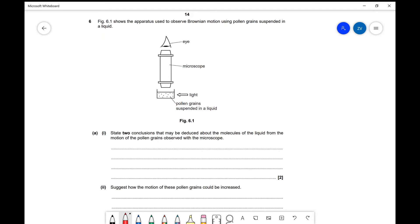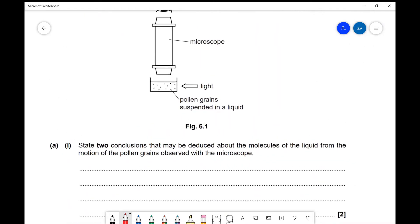Okay, well figure 6.1, the one just here, shows the apparatus used to observe Brownian motion using pollen grains suspended in a liquid. So we have a microscope down here and that's looking down at some pollen grains suspended in a liquid. What we're going to be observing is that those pollen grains are actually going to be moving randomly about, and the reason they're doing that is because they're interacting with the smaller molecules of the water.